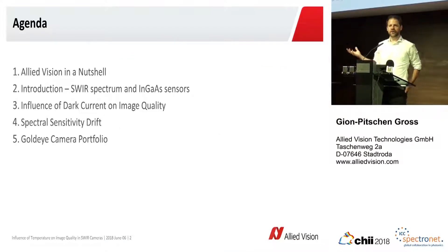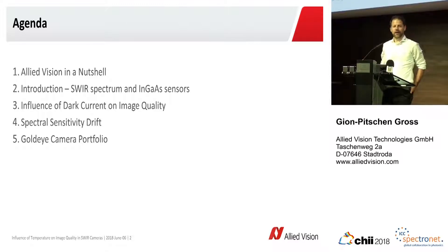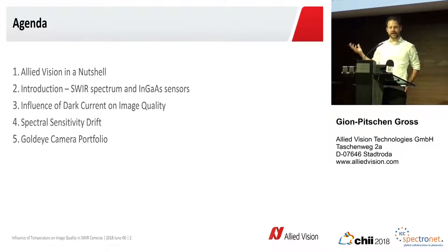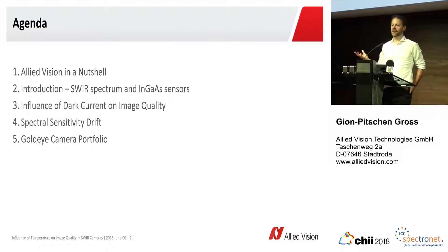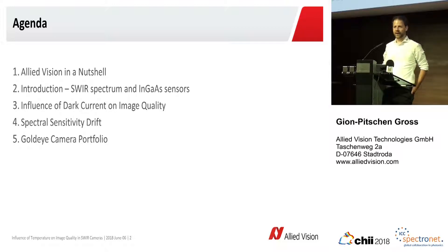So first, I'm going to give you a short introduction to Light Vision, then some words about SWIR and InGaAs sensors, and then I'll touch the two points which have a large influence on image quality, which is the dark current and spectral sensitivity drift, and in the end some words about our camera portfolio in the SWIR range.